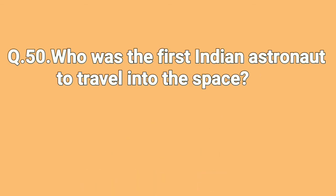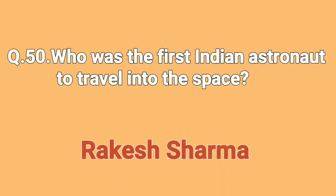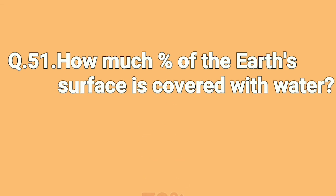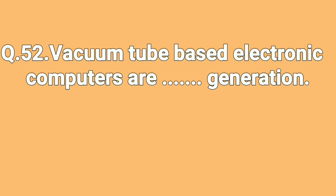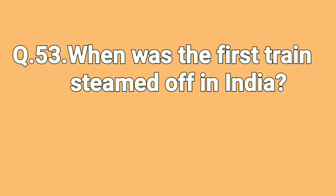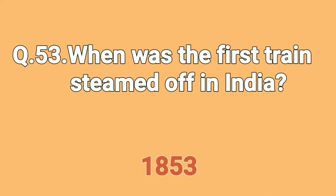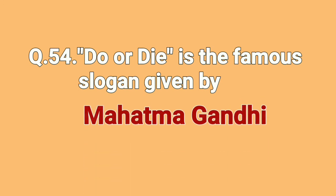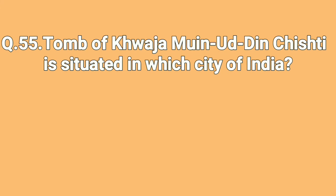Who was the first Indian astronaut to travel into space? Rakesh Sharma. How much percent of the Earth's surface is covered with water? 70%. Vacuum tube-based electronic computers are of which generation? First Generation. When was the first train steamed off in India? 1853. 'Do or Die' is a famous slogan given by Mahatma Gandhi. The tomb of Khwaja Moinuddin Chishti is situated in which city of India? Ajmer.